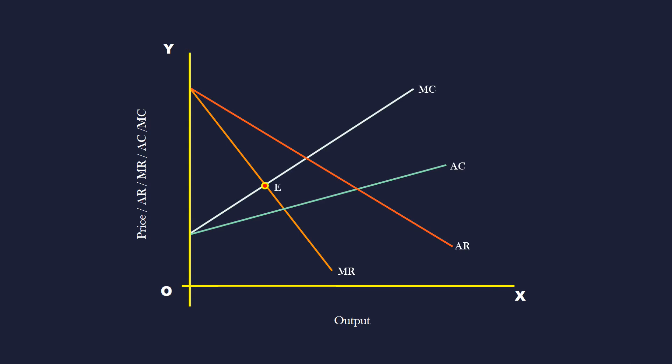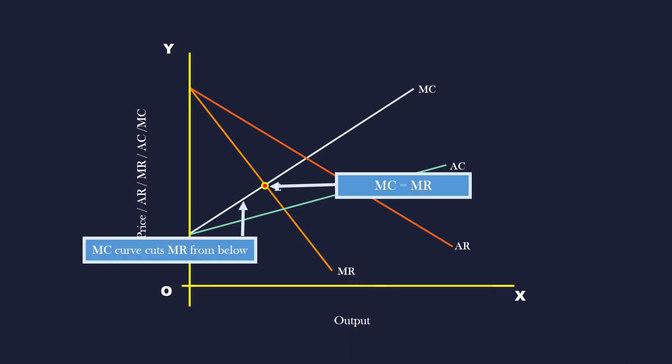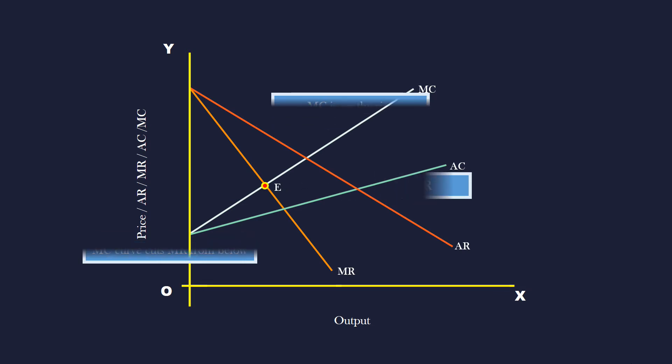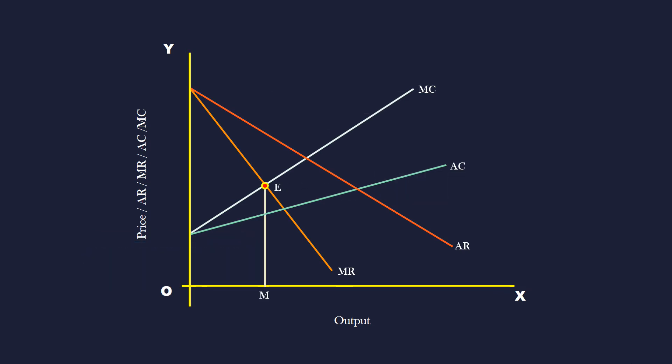The firm's equilibrium is formed at E. At this point, marginal cost is equal to marginal revenue, and the marginal cost curve cuts the marginal revenue curve from below. Marginal cost is on the rise. Equilibrium output is M.